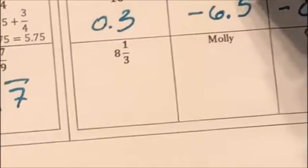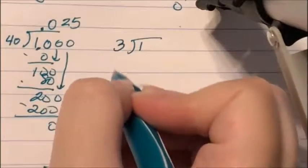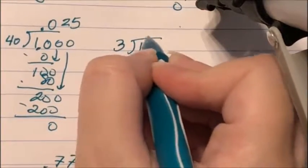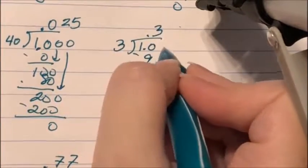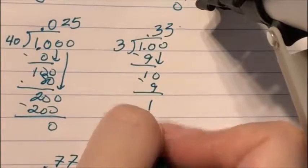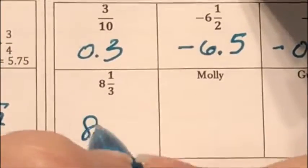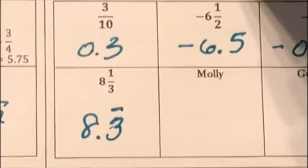Then I have 8 and 1 third. I'll handle the 1 third by dividing: 3 can't go into 1, but goes into 10 three times — that's 9; subtract to get 1, bring down a 0. You can see the pattern: 3 is going to repeat. So 1 third equals 0.3̄, meaning 8 and 1 third equals 8.3̄.